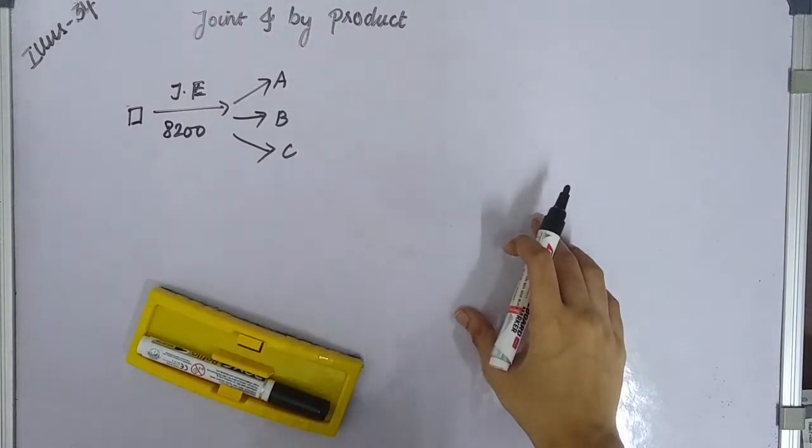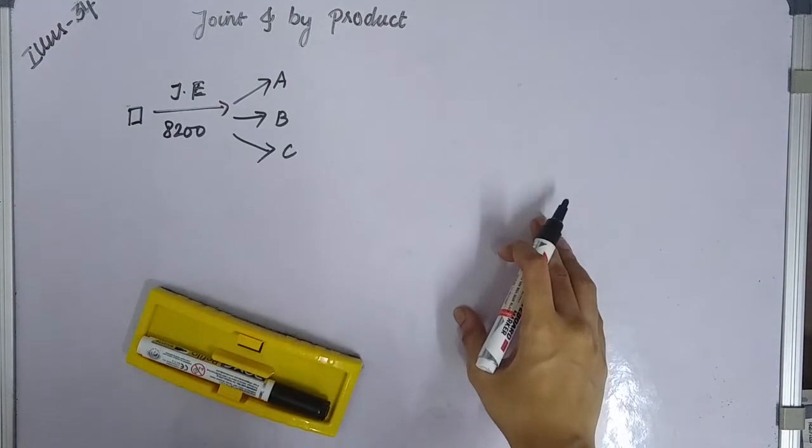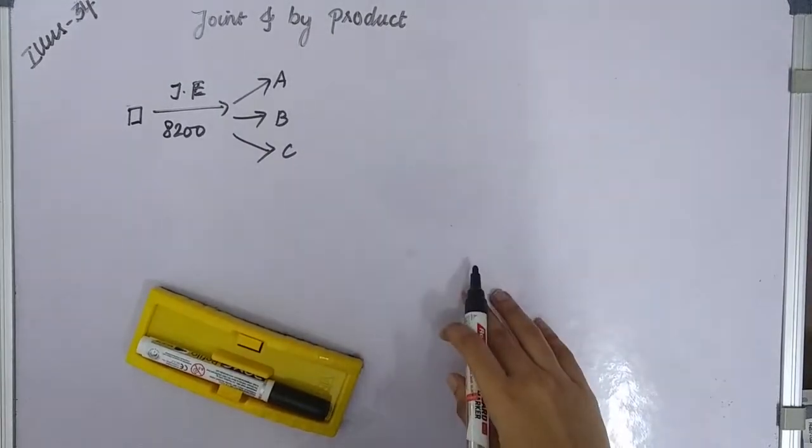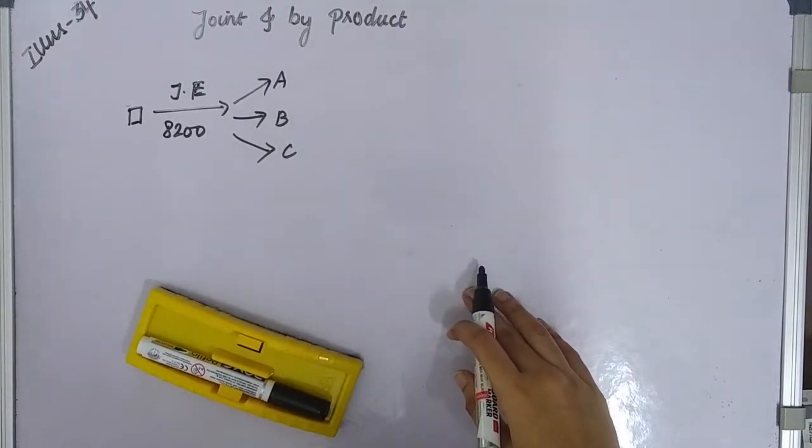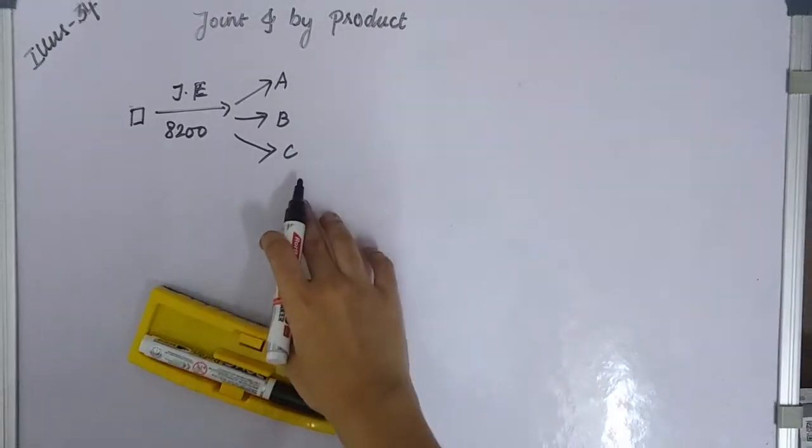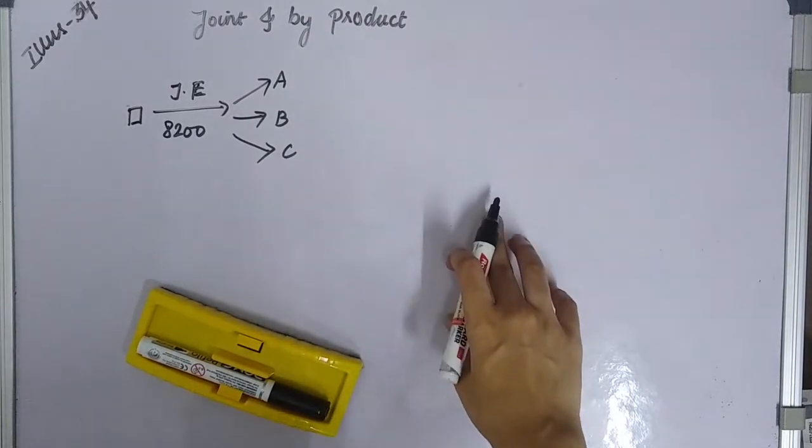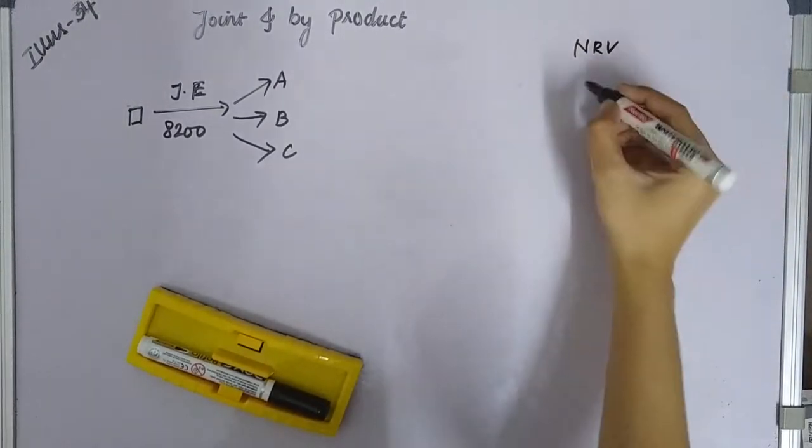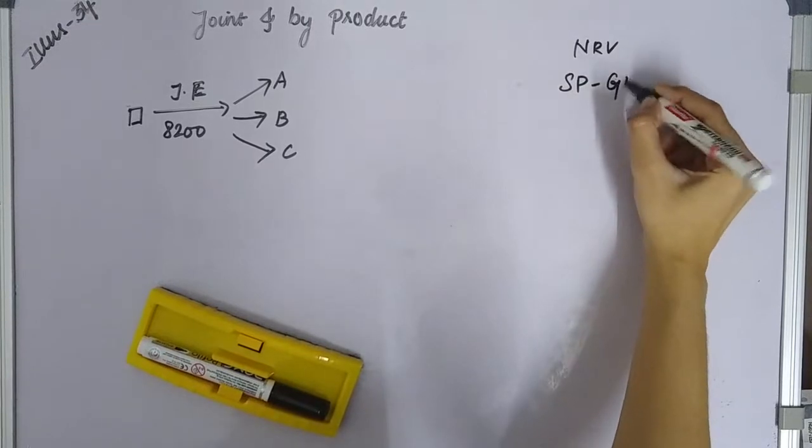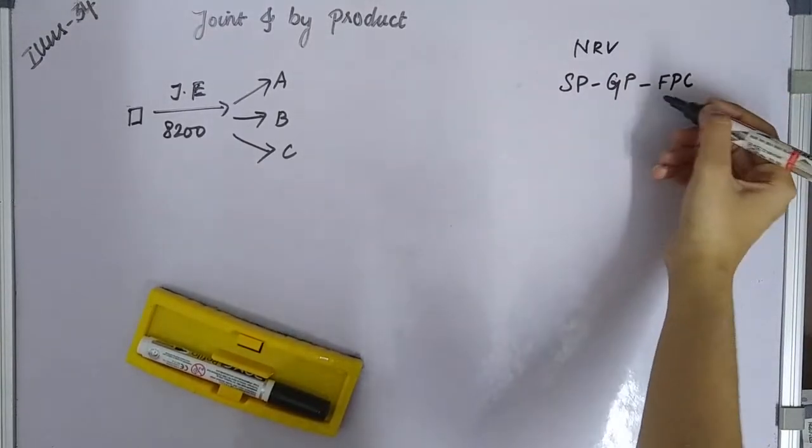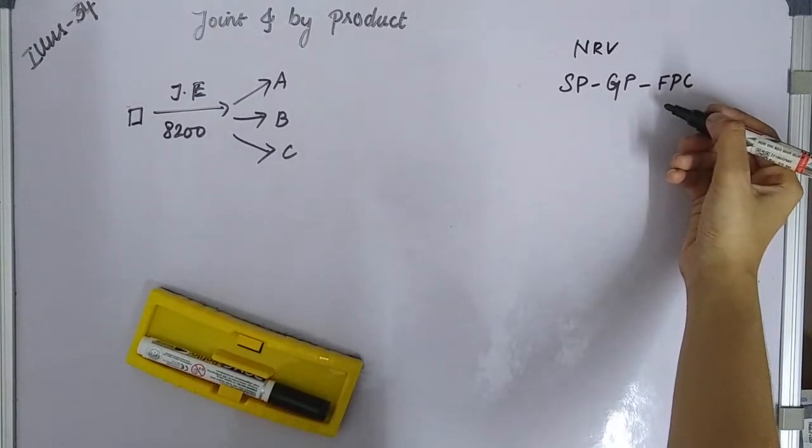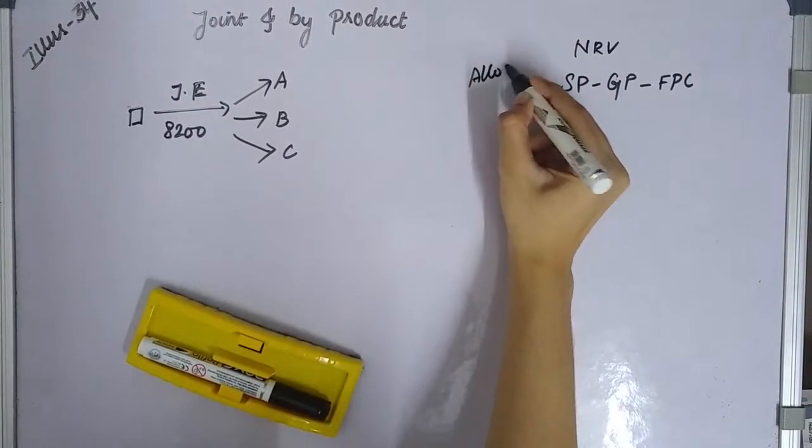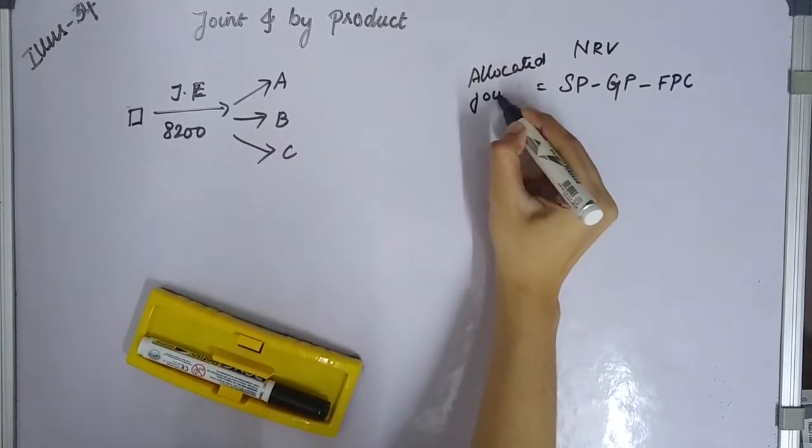The percentage of sales are 33%, 25%, 15%. For subsequent expenses, we have sales profit percentage. So the formula is: sales minus gross profit minus further processing cost equals allocated joint cost.